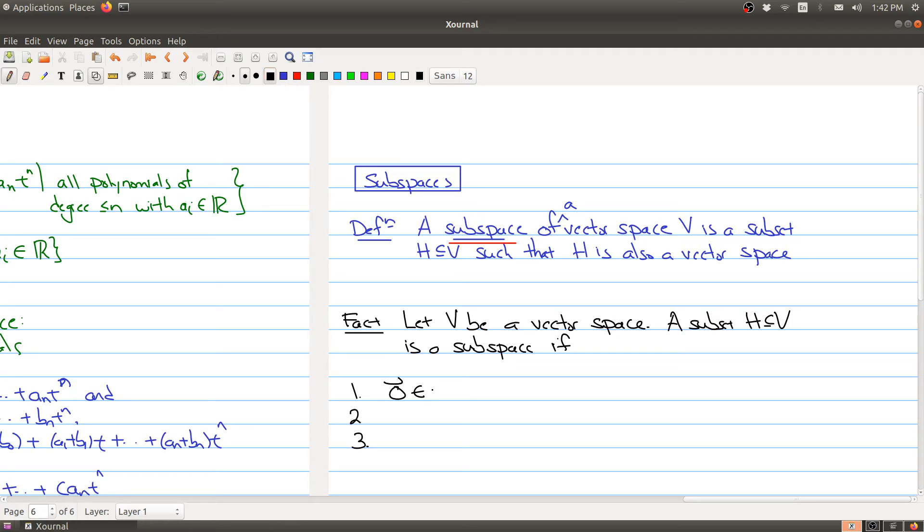Well, you can check by just checking three things. First of all, you can check that zero belongs to H. So the zero vector of V also belongs to H. So if H doesn't have the zero vector, it can't be a vector space.